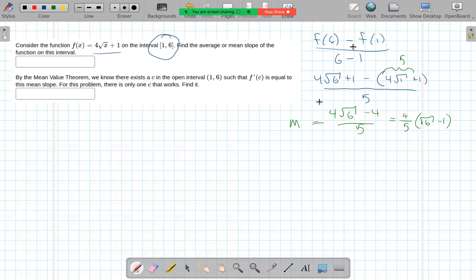Now, according to the mean value theorem, if this function is continuous, then there is going to be an x value in between for which there's a tangent line with that slope right there.